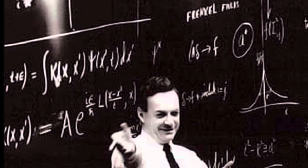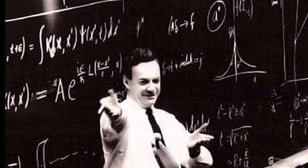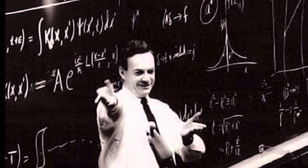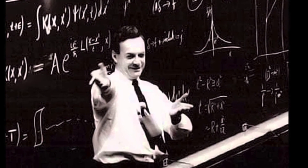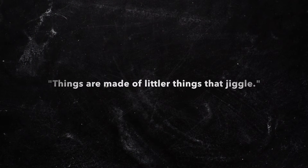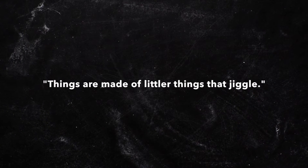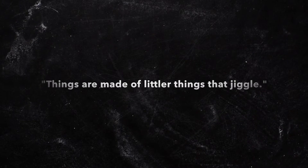Richard Feynman, the famous physicist and architect behind quantum electrodynamics, once quipped that if we had to reduce all of human knowledge into one intelligible sentence, he would write: 'Things are made of little things that jiggle.' This is a profound understanding of material structure, and not merely a humorous slogan, as Feynman is getting right to the heart of the issue.